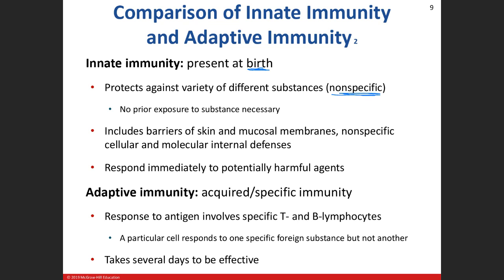Innate immunity is non-specific — like your skin, it keeps everything out. It keeps water out, it keeps bacteria out. You don't need to be exposed to something to actually get an immune response from it. With the adaptive immune system — like chicken pox — the first time you have it naturally, you have it for a couple weeks, then it goes away. If exposed again, since you already have that immunity, you can mount a much better and quicker immune response. With innate, it doesn't matter how many times you're exposed — it's gonna be the same response.